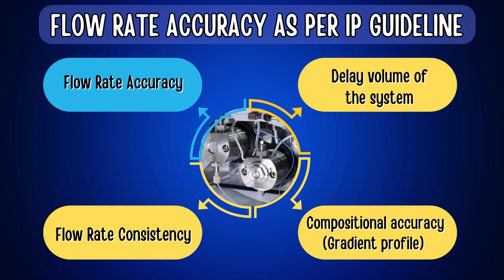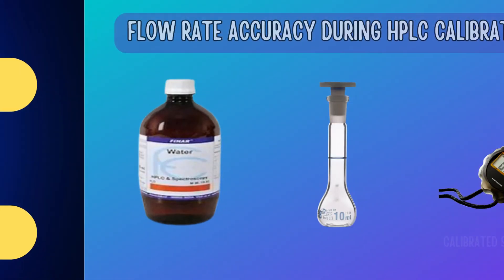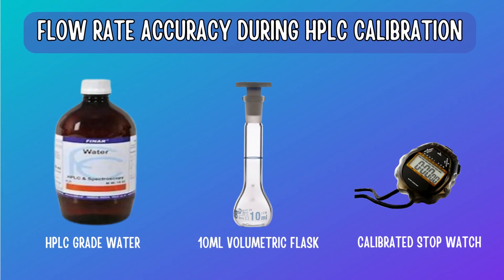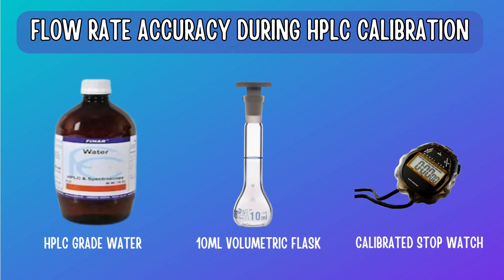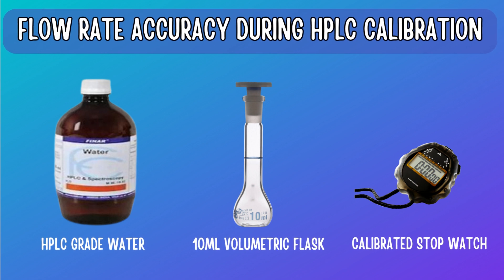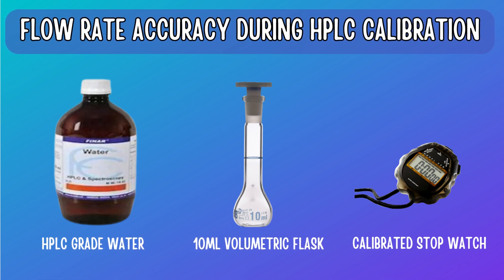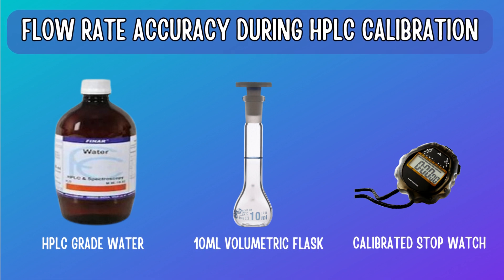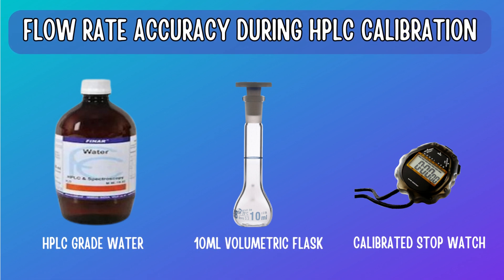We will understand how to perform flow rate accuracy during HPLC calibration. To measure flow rate accuracy, we require HPLC grade water, a 10 ml volumetric flask, and a calibrated stopwatch.